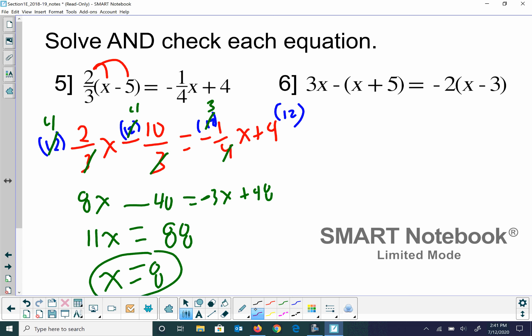Next problem, make sure you distribute the negative over the parentheses and also the negative 2 over the parentheses. So I get 3x minus x minus 5 equals negative 2x plus 6. So that's going to give me 2x minus 5 equals negative 2x plus 6. Add 2x to both sides. So I get 4x over here. Add 5 to both sides. So I get 11 over here. So x equals 11 over 4. And that answer's fine.